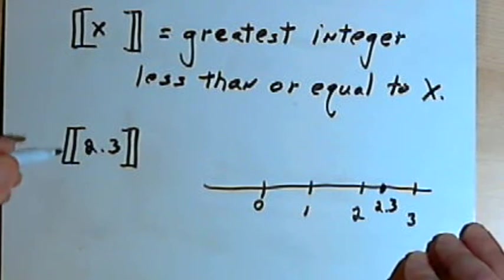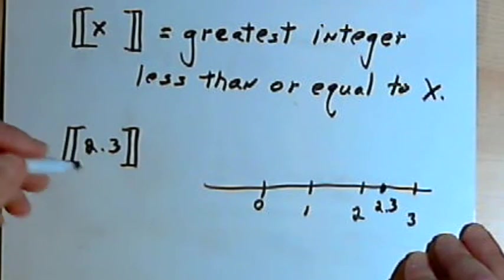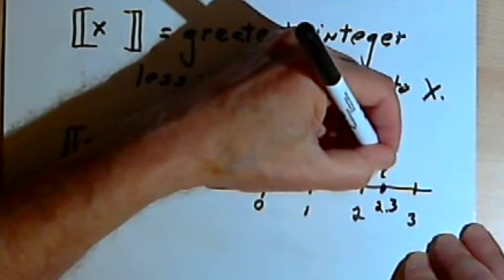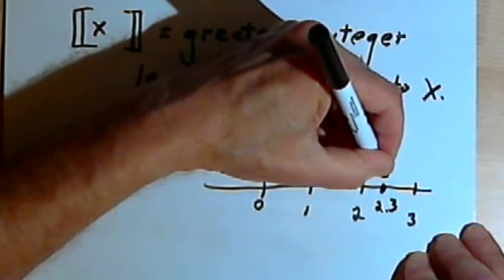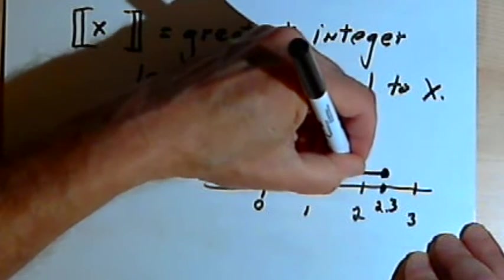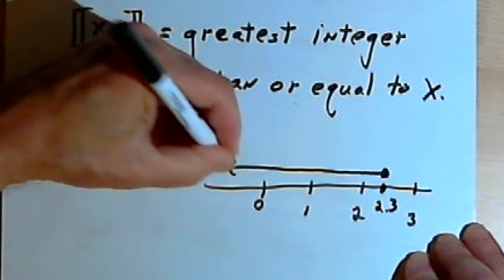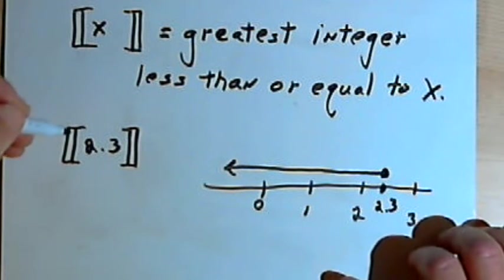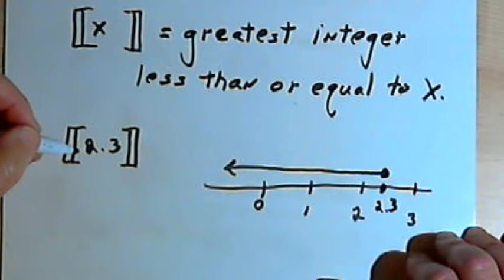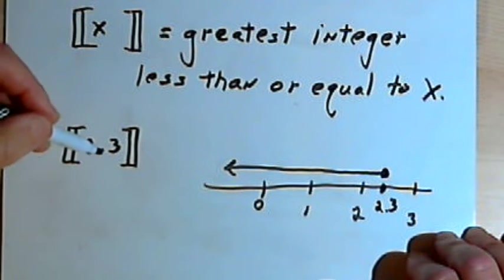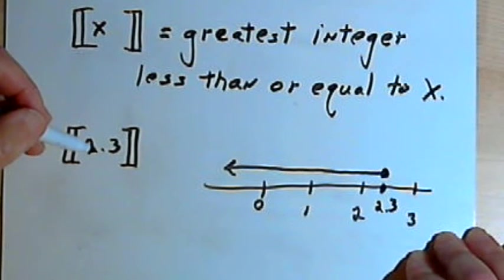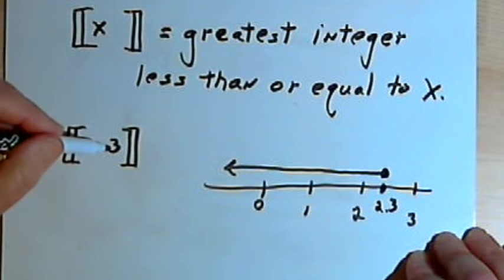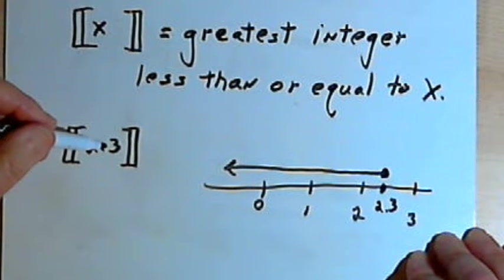So I'm looking for a number which is less than or equal to 2.3. So I can draw an arrow on this number line from that 2.3 down to the left, and I want that number to be an integer. So an integer is a number that is like a positive or a negative whole number. There's no decimals after it, there's no fractions after it.